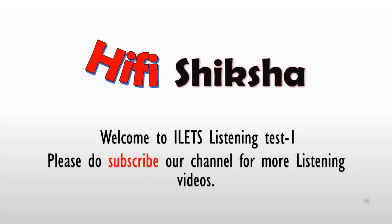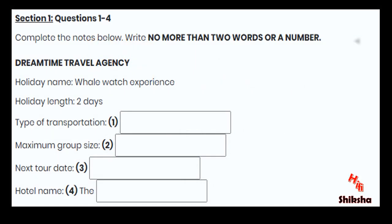Welcome to IELTS Listening Test 1. Please do subscribe for more listening videos. Test 1. You will hear a number of different recordings and you'll have to answer questions on what you hear. There will be time for you to read the instructions and questions, and you'll have a chance to check your work. All the recordings will be played once only. The test is in four sections. At the end of the test, you will be given ten minutes to transfer your answers to an answer sheet.